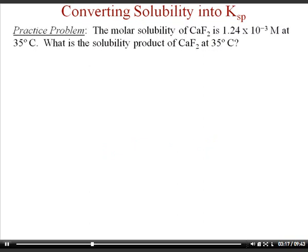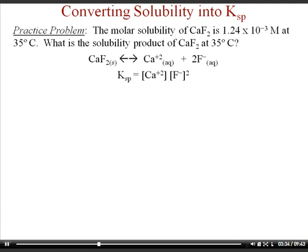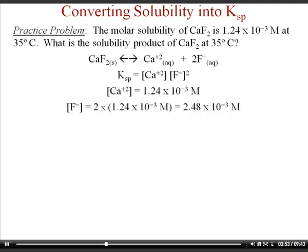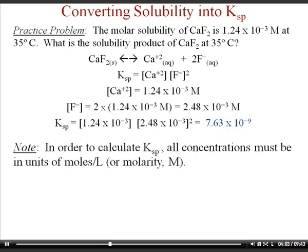Here's an example of calculating the solubility product given the concentration of the salt in solution. Calcium fluoride breaks apart into calcium ions and fluoride ions. The KSP expression is the concentration of Ca²⁺ raised to the first power times the concentration of F⁻ squared. The fluoride ion is squared because of the coefficient of two. The calcium ion concentration equals the original salt concentration (1:1 ratio), but the fluoride concentration is twice the salt concentration (1:2 ratio). Plugging those in gives KSP = 7.63 × 10⁻⁹, with no units.